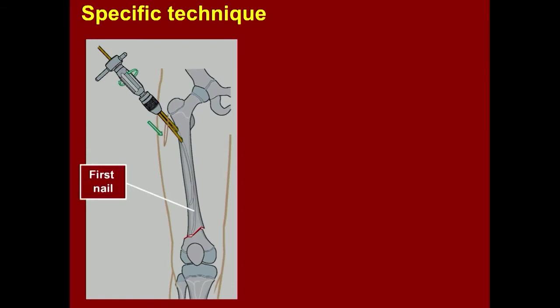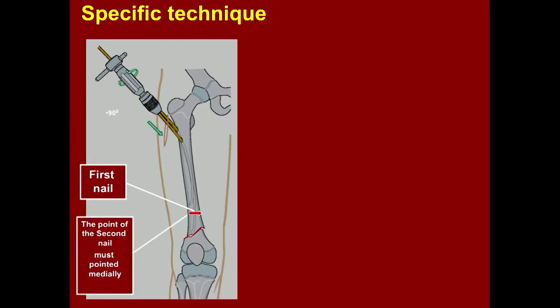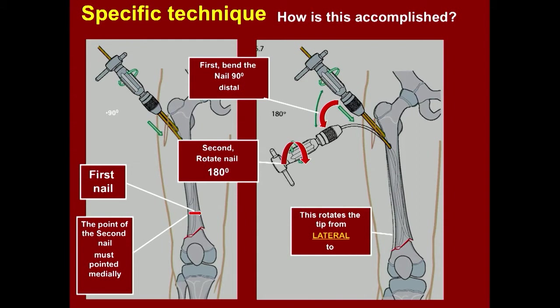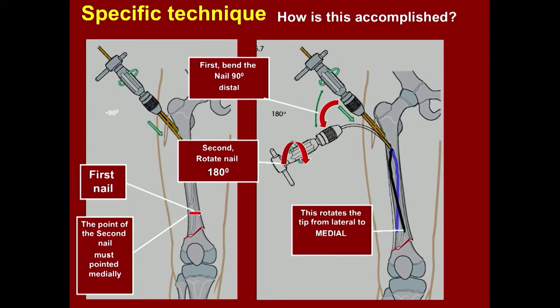Here's a trick: first put the first nail down, which brings the pin to the lateral side. For the second pin, bring it down about two-thirds or three-fourths, but it must be medial. You bend the nail 90 degrees, then rotate it 180 degrees — that rotates the tip from medial to lateral. This gives you two-point fixation with the two nails spread at the fracture site. This is the AO-recommended technique.